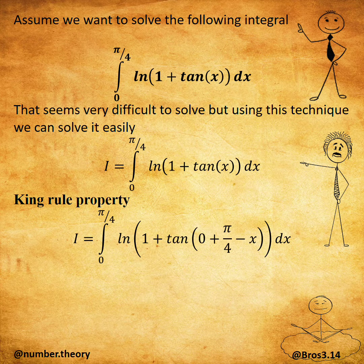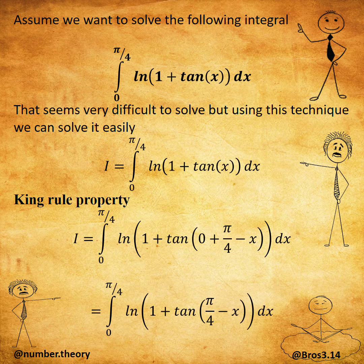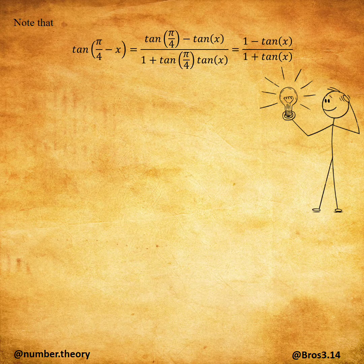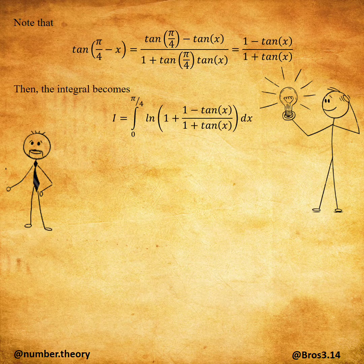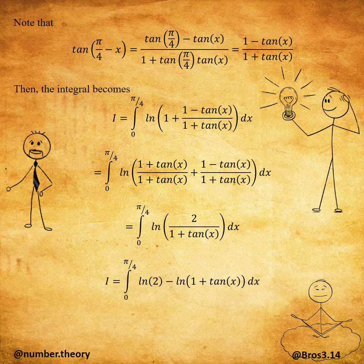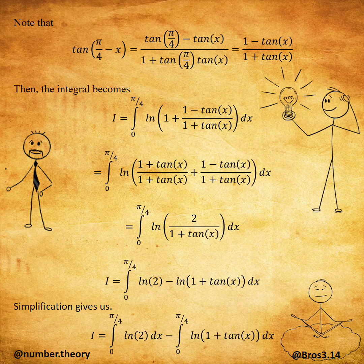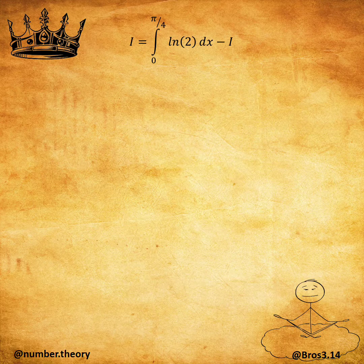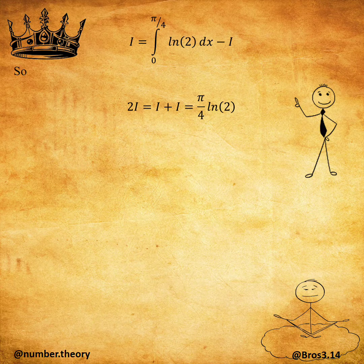Applying the King property, we find that — note that the property of tangent — then the integral becomes, and we find that simplification gives us, so we obtain.